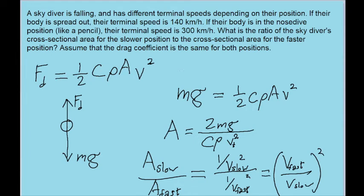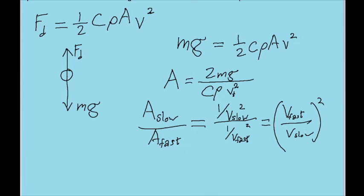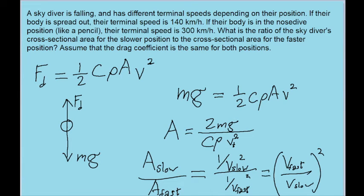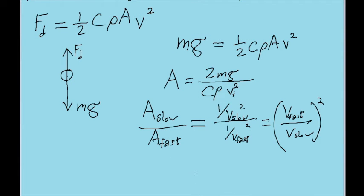And that's really all we gotta do. We don't need to do any fancy unit conversions because the kilometers per hour will just cancel each other out and we'll end up with a unitless number. So we put in 300 kilometers for the fast speed and 140 kilometers for the slow speed, and we find a ratio of about 4.59. So that is our answer to the problem.